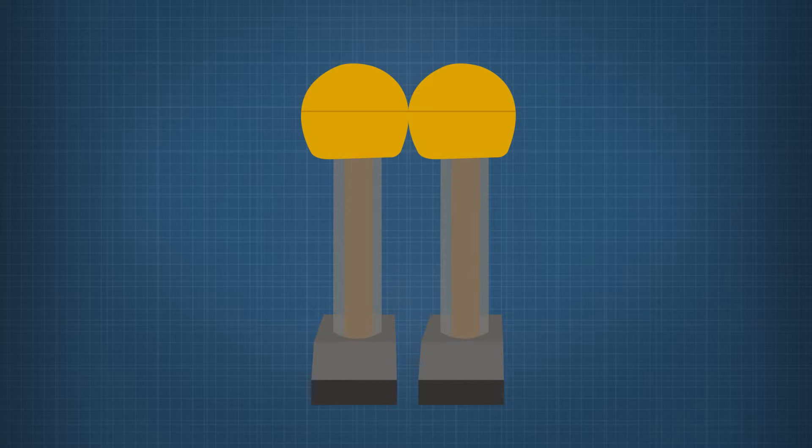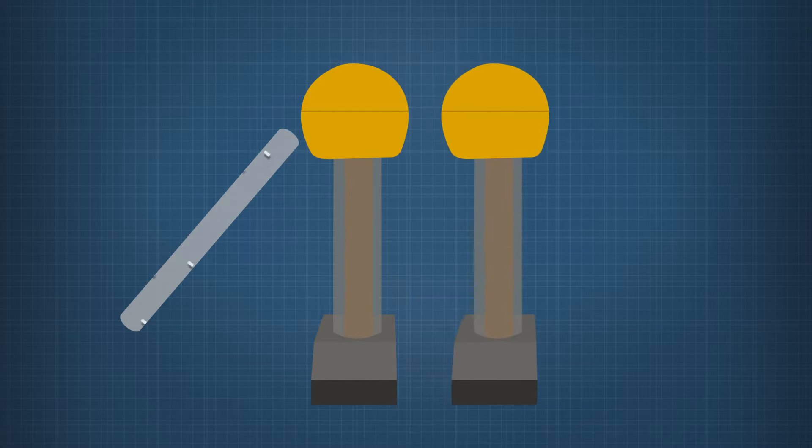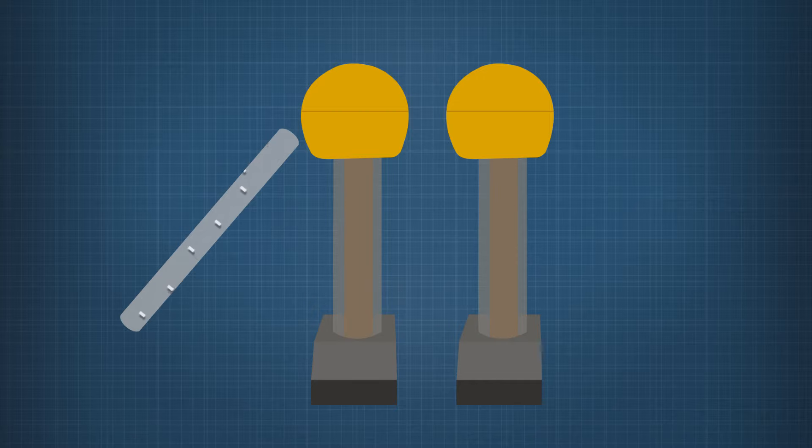Try out this example. Two uncharged metal spheres on insulating stands are in contact with one another. A negatively charged rod is brought near the left sphere but does not touch it. With the rod held in place, the right sphere is moved so it no longer touches the other sphere. Finally, the rod is moved far away from the spheres.